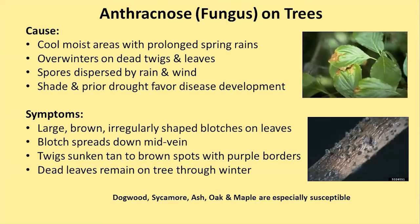Anthracnose is a fungus that can affect trees, vegetables, annuals, and perennial plants, but I'm just going to talk about it on trees where we see most of the problem. The cause is cool, moist areas with prolonged spring rains that we sometimes can't avoid. It overwinters on dead twigs and leaves—sanitation is key. The spores are dispersed by wind and rain, and shade and prior drought problems can favor its development, so trees need as much sun as possible.